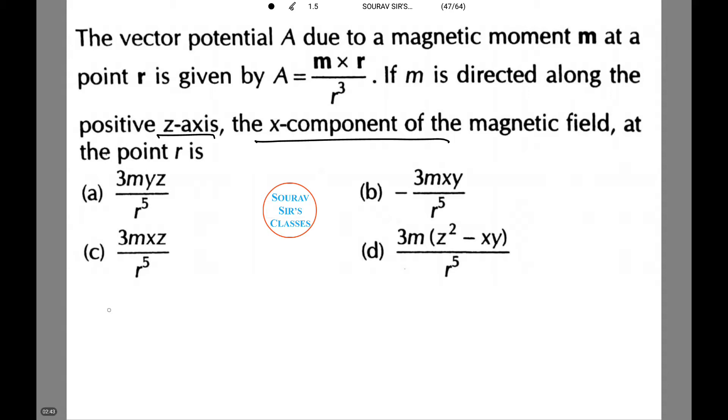Let's see how to calculate this. A equals m into r by r cube, which equals m k cap into x i cap plus y j cap plus z k cap whole divided by r cube. Therefore A equals m by r cube into x j cap minus y i cap.